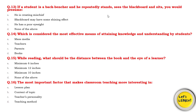Question number 13: If a student is a back-bencher and repeatedly stands to see the blackboard and sits, what would you presume? Options: the child is mischievous and creating indiscipline; the blackboard has a shining or reflection effect; or the child has poor eyesight and cannot see from behind. The C option — poor eyesight — is the right answer.